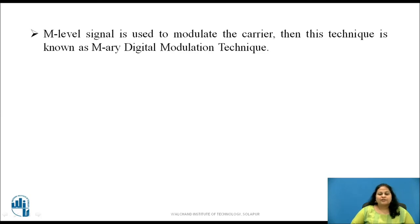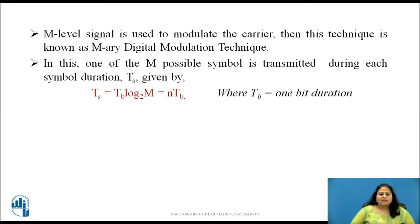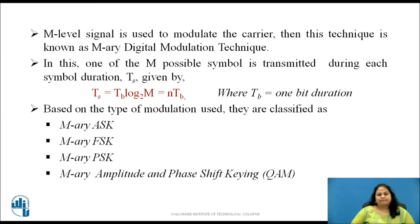If this M-level signal is used to modulate the carrier, then this technique is known as M-Ary digital modulation technique. In this, one of the M possible symbols is transmitted during each symbol duration Ts, which is given by Ts equals Tb times log base 2 of M, where Tb is one bit duration. Based on the type of modulation used, M-Ary digital modulation techniques are classified as M-Ary ASK, M-Ary FSK, M-Ary PSK, and M-Ary amplitude and phase shift keying, also known as quadrature amplitude modulation (QAM).